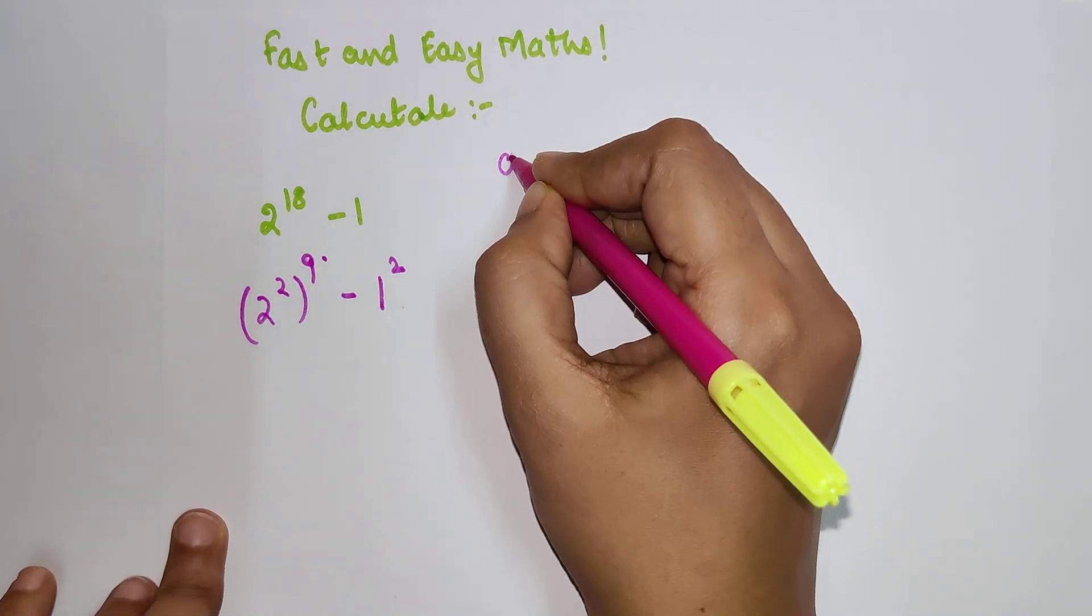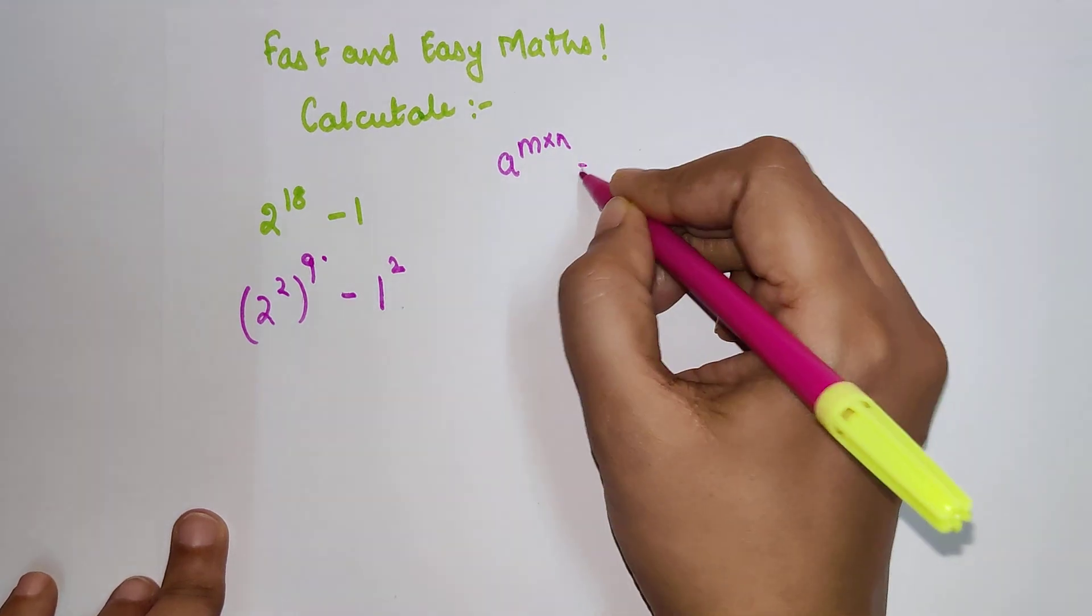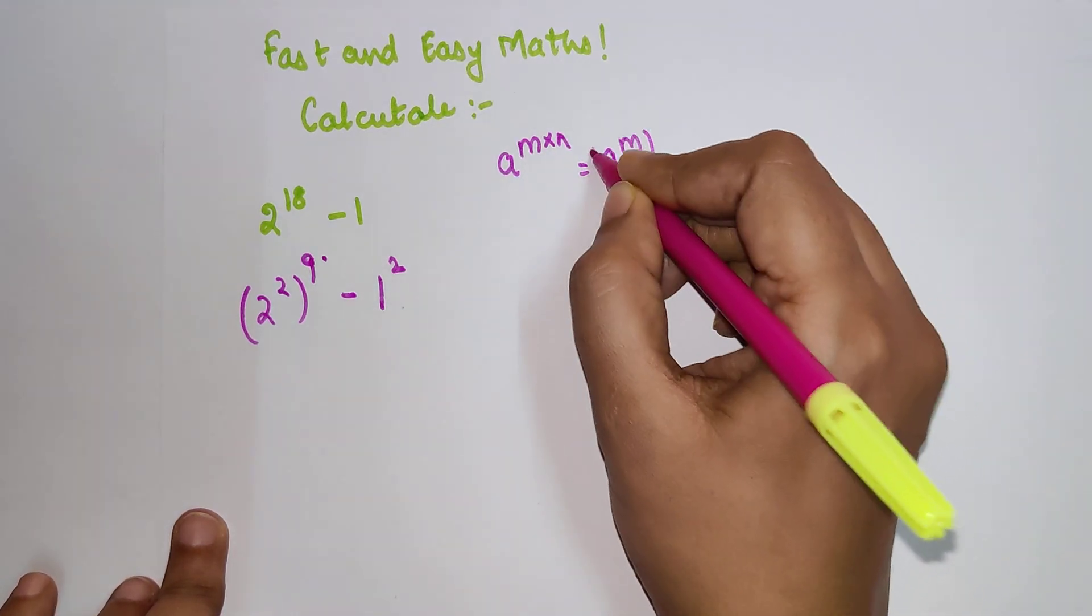The logic is a^(m×n) can be written as (a^m)^n.